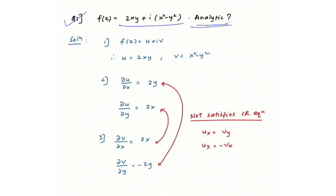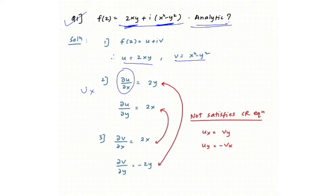Question number one: f(z) is given, and you have to comment on whether it is analytic or not. The function is simple enough that you can directly compare real and imaginary parts: u = 2xy and v = x² − y². Now find uₓ and u_y. uₓ = 2y and u_y = 2x. In partial differentiation of u = 2xy with respect to x, y is constant, so derivative of x is 1, giving 2y.